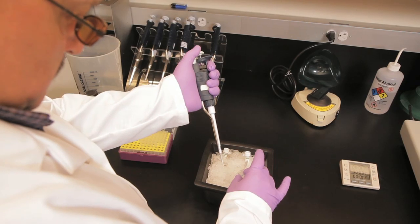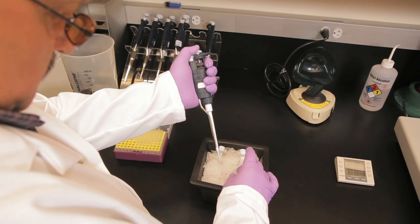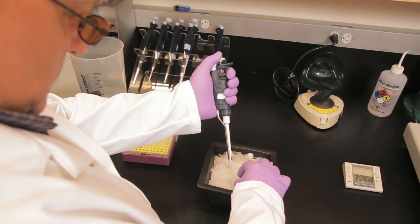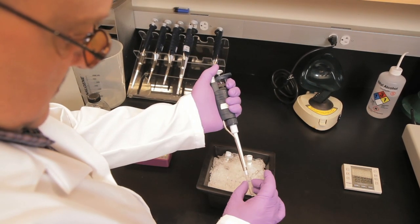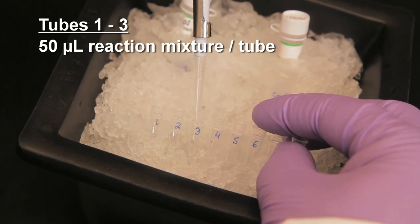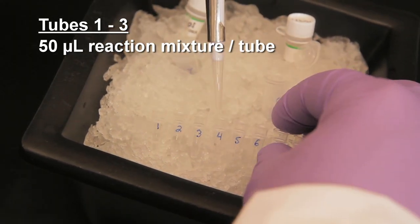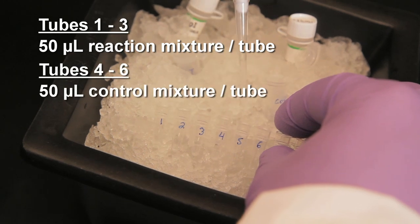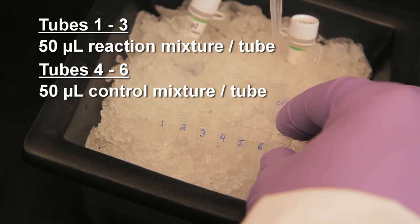To begin the restriction enzyme digestion, aliquot 50 microliters of the reaction mixture into each of three 0.2-milliliter PCR strip tubes labeled 1 through 3. Then aliquot 50 microliters of the control mixture into each of three PCR strip tubes labeled 4 through 6.